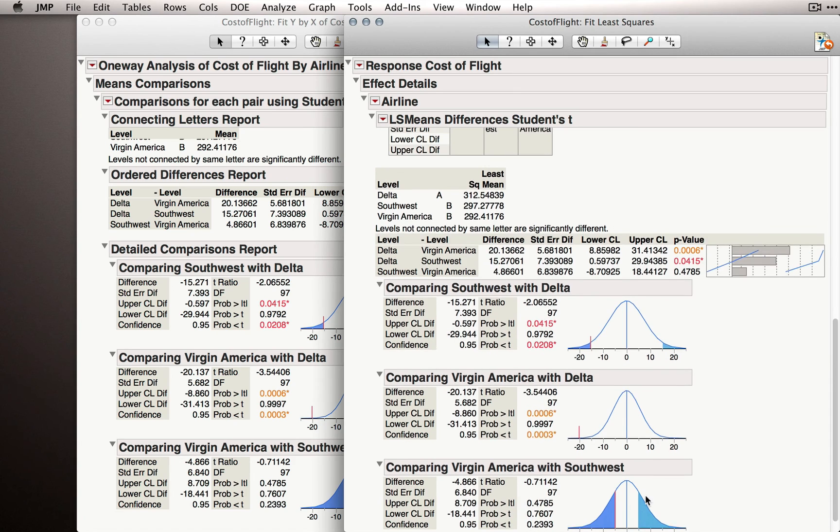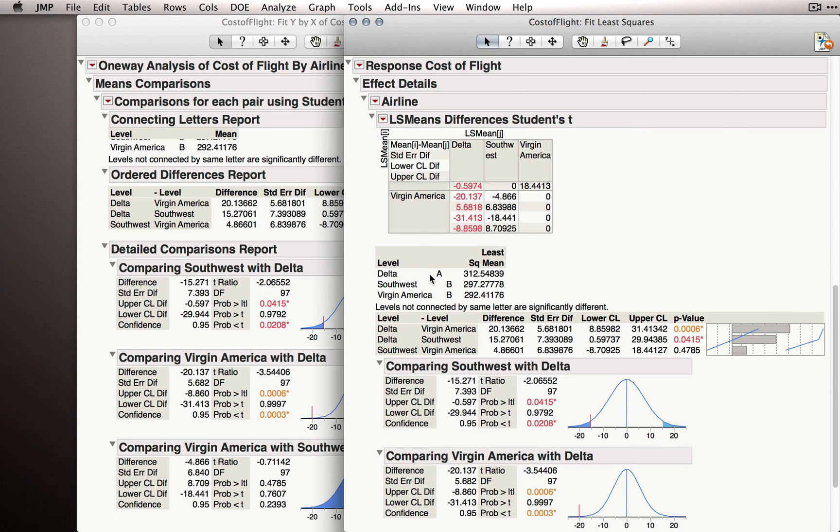The interpretation of this output, including the interpretation of the Connecting Letters Report, is identical to the output we got in Fit Y by X. And in fact, this output is identical. This is running the same tests, and these are the same output. It's simply in the context of a different platform.